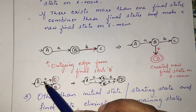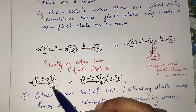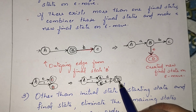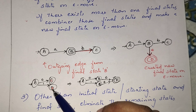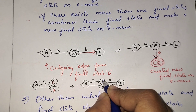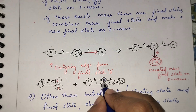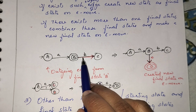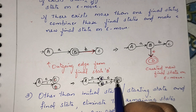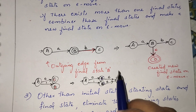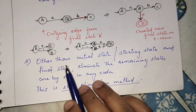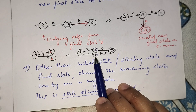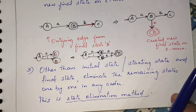If there are more than one final state, you need to create a new final state on epsilon move, combining them. The existing final states become non-final, and the new single final state is created on epsilon move. The third rule is: other than the initial state and the final state, eliminate all intermediate states one by one in any order.